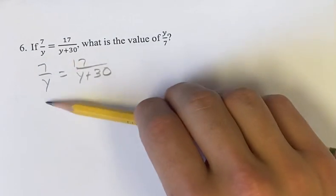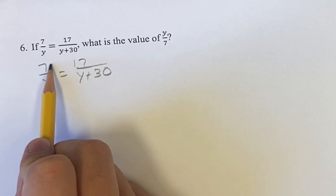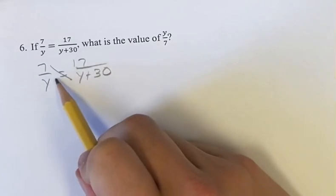What we do when we have two fractions that are set equal to each other is we can cross-multiply. So we can multiply the numerator of one by the denominator of another, and vice versa.